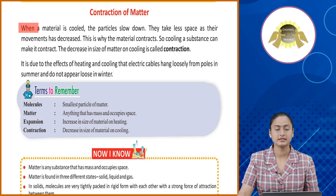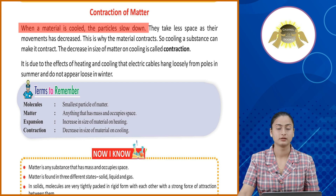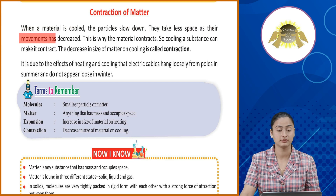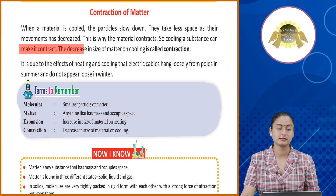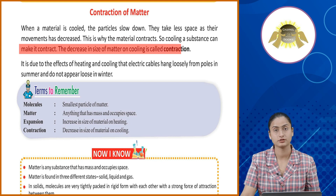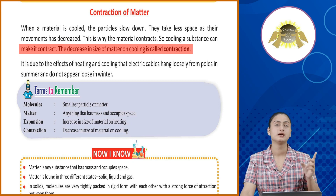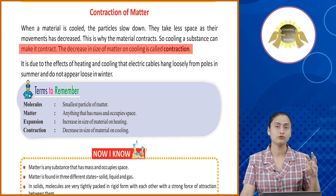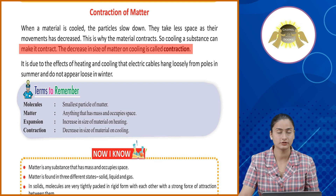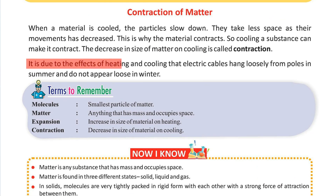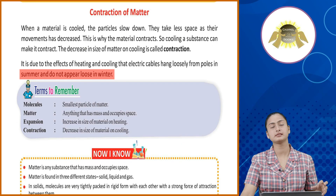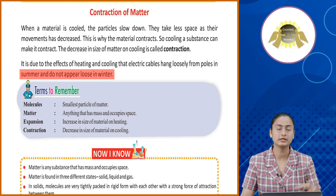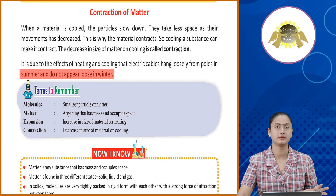Contraction of matter. When a material is cooled, the particles slow down. They take less space as their movement has decreased. This is why the material contracts. Cooling a substance can make it contract — the decrease in size of matter on cooling is called contraction. Toh jaise heating se expansion hoti hai, same tarike se agar cool down kara jayega toh matter contract kar jata hai aur ushi ko bolte hai contraction. It is due to the effects of heating and cooling that electric cables hang loosely from poles in summer and do not appear loose in winter.